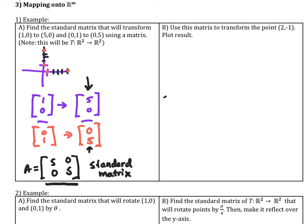E1 is the vector (1,0) and E2 is the vector (0,1). Those are our two starting points. Wherever we map these two points to will give us the columns of our transformational matrix — in this case (5,0) and (0,5). That's all you have to do to build these matrices, and there are other ways to do it too, but this method is very straightforward.